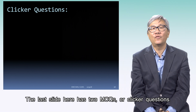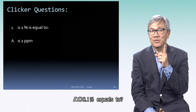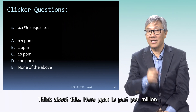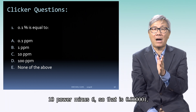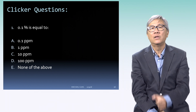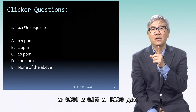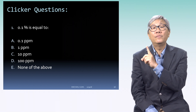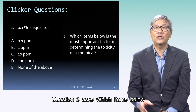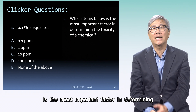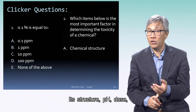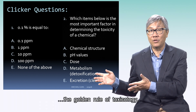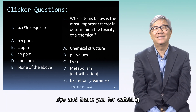The last slide has two MCQs. Question 1: 0.1% equals to which? 0.1 ppm, 1 ppm, 10 ppm, 100 ppm, or none of the above? Here, ppm is parts per million — 10 to the power of minus 6, so that's 0.000001. And 0.001 is 0.1%, or 10,000 ppm. So the answer is none of the above. Question 2: Which item below is the most important factor in determining the toxicity of a chemical — its structure, pH, dose, metabolism, or final excretion or clearance? The answer is obviously the golden rule of toxicology: dose. Bye and thank you for watching.